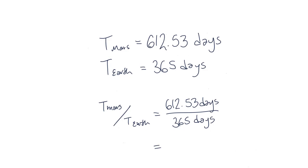So we have the period of Mars is equal to 612.53 days. We know that the period of Earth is equal to 365 days, so how does the period of Mars compare to that of Earth? If we divide the period of Mars by the period of Earth, we come out with a final answer of 1.68.